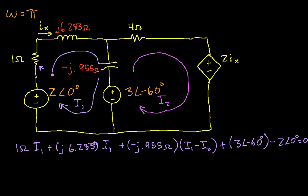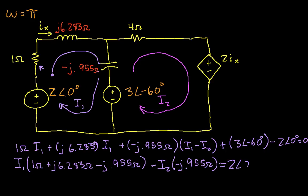And we can simplify this somewhat and put it in the following form that will make it easier to do the computations in Wolfram Alpha. So we factor an I1 out where we can. So we have 1 ohm plus J 6.283 ohms minus J 0.955 ohms minus I2 times minus J 0.955 ohms. And now we'll move all of our independent voltages to the other side of the equation. So we'll have 2 at an angle of zero degrees minus 3 at an angle of minus 60 degrees.